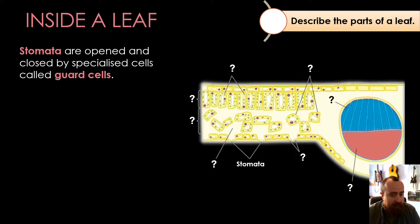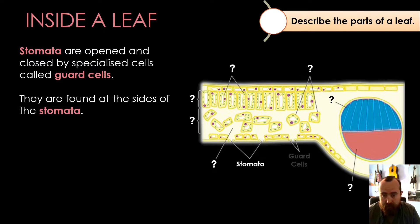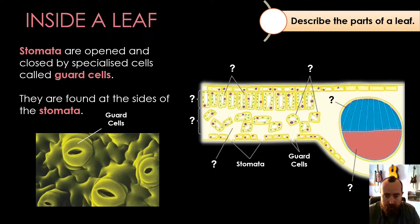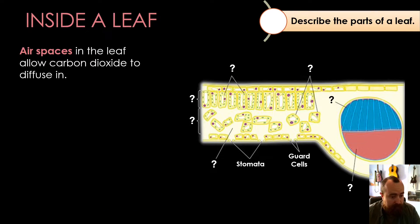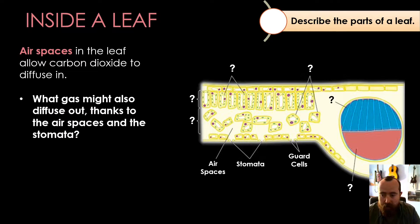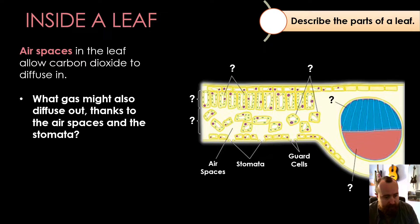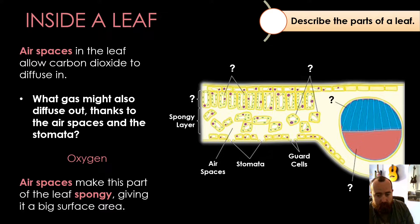Stomata are opened or closed by things called guard cells, which are found on the sides of the stomata — two guard cells surrounding each hole. This lets the carbon dioxide diffuse in and up into the air spaces inside the leaves. We also need something to diffuse out: carbon dioxide comes in as a reactant for photosynthesis, but there's also a gas produced as a product of photosynthesis. That gas is oxygen, and the stomata allow the oxygen to leave through the bottom of the leaf.